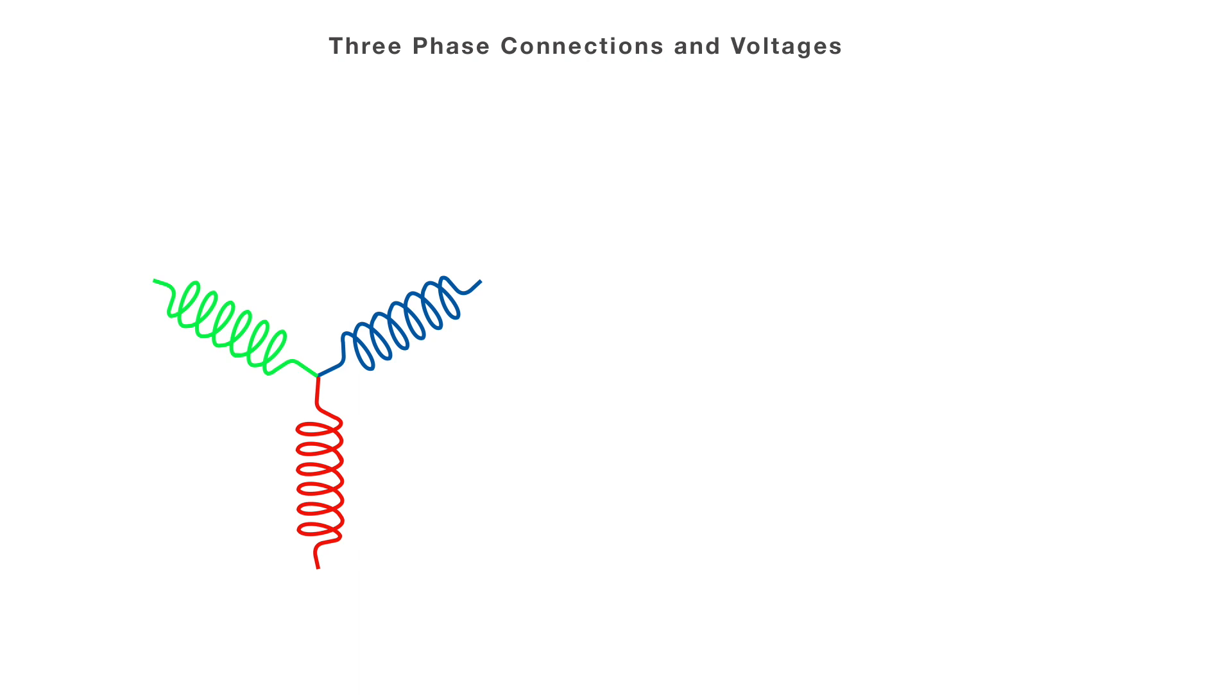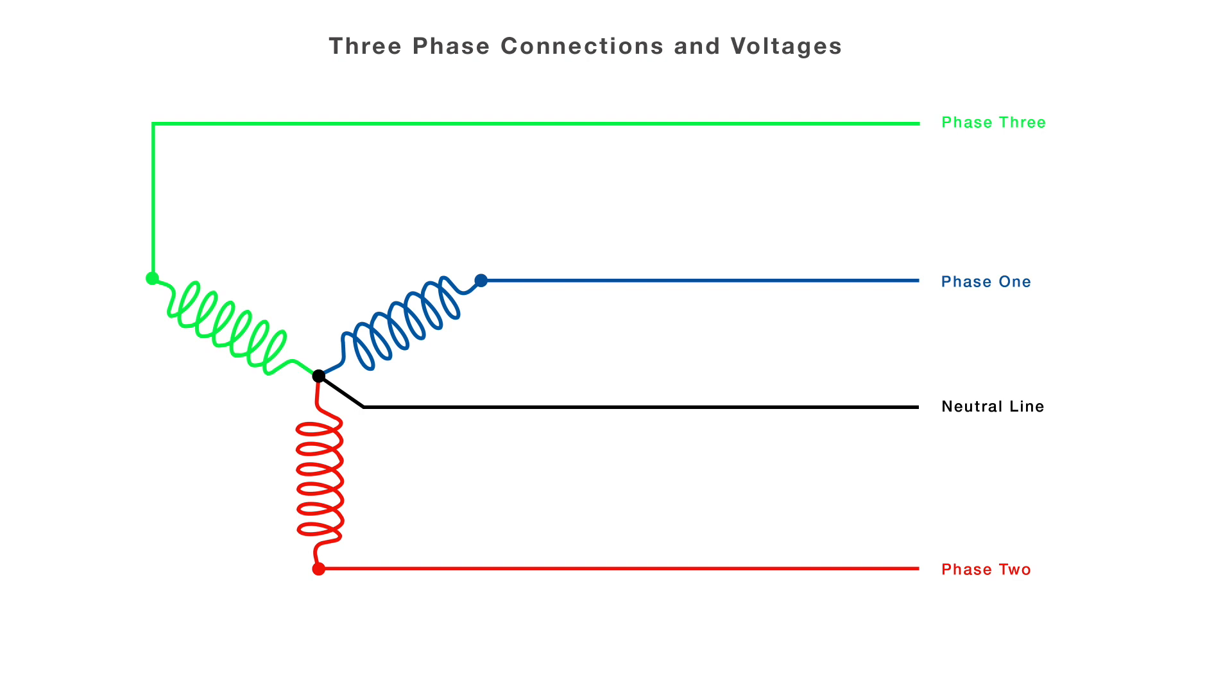In the most common star connection, phase one, phase two, and phase three are connected in a star format. The neutral line is connected to the center of the star arrangement. Another line is connected to phase one, then another to phase two, and then the third phase to phase three. In a series star connection, the voltage read between phase one and neutral is 277 volts.